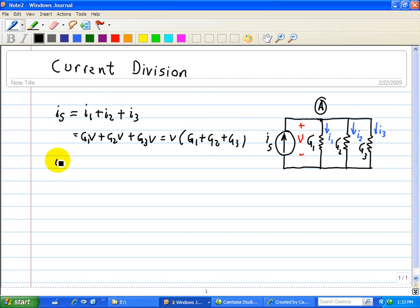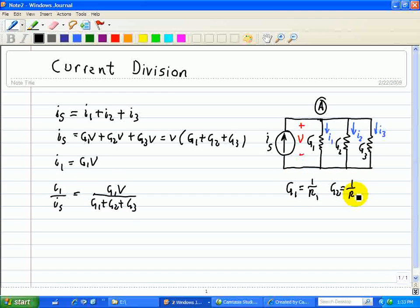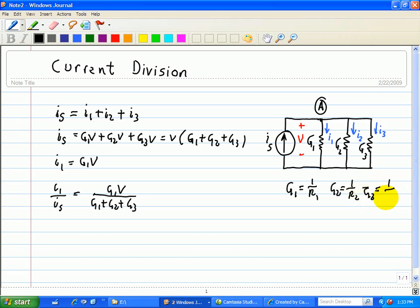We note that I1 is equal to G1V. So if we divide this equation by this equation for I1, we can get I1 divided by IS, since this is also equal to IS, is equal to G1 divided by G1 plus G2 plus G3. We note that these conductances are also equal to G1 over 1 over R1, G2 is equal to 1 over R2, and G3 is equal to 1 over R3.